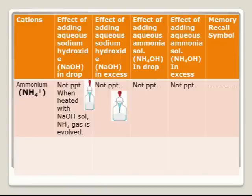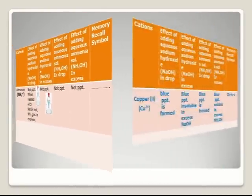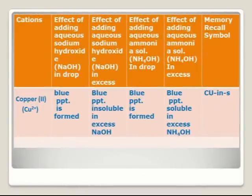The next ion is ammonium ion. This is a very unique reaction because no precipitate is formed at all. In both test reagents, ammonium ion does not form any precipitate. If you add sodium hydroxide in drop and in excess and no precipitate is formed, then pick the second reagent — ammonium hydroxide — and add it. If no precipitate is formed either in drop or excess, the clue is to suspect ammonium ion.